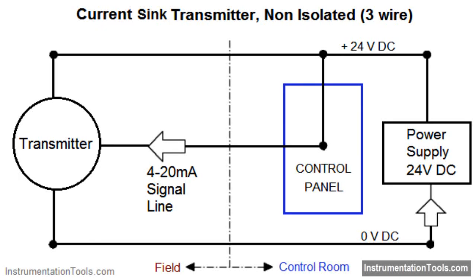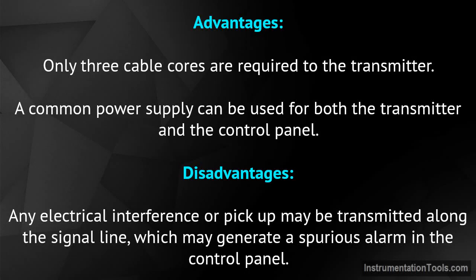Three-wire current sink transmitter non-isolated. The transmitter and control panel can use the same 0 volts and 24 volts DC supply lines. The 4 to 20 milliamp signal flows through the 0 volts DC line and the signal line to the controller. Advantages: only three cable cores are required to the transmitter.